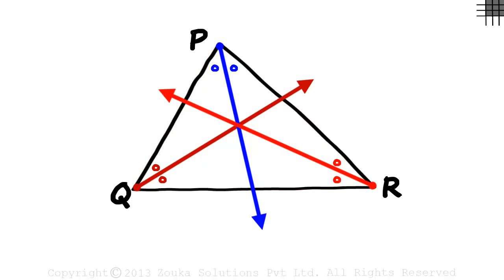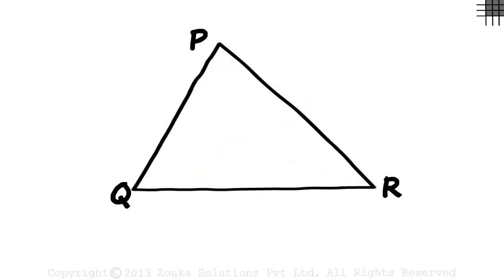The angle bisectors of all the angles of a triangle always meet at a point. But do the perpendicular bisectors of the sides of a triangle also meet at a single point?